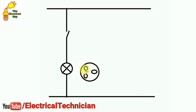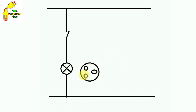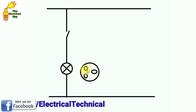Now if we want to control a power socket through this switch, how do we do the connection? Look here — this symbol is of a single-phase power socket. There are three terminals in this: one is for phase supply, one is for neutral supply, and one is connected with earth.